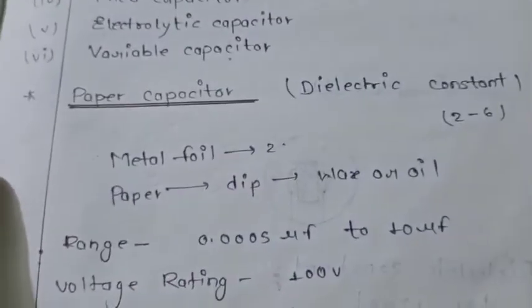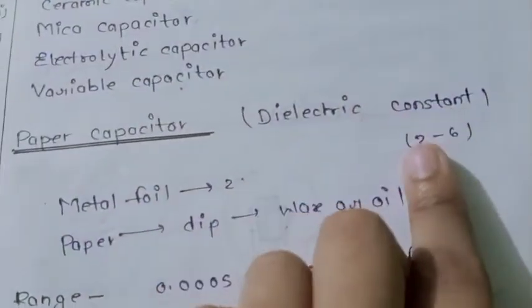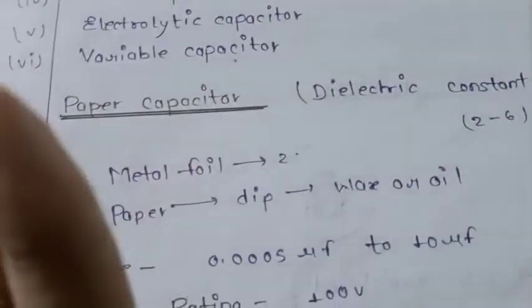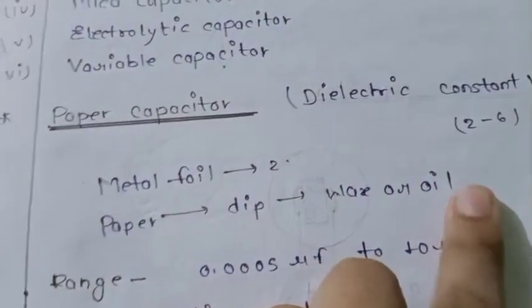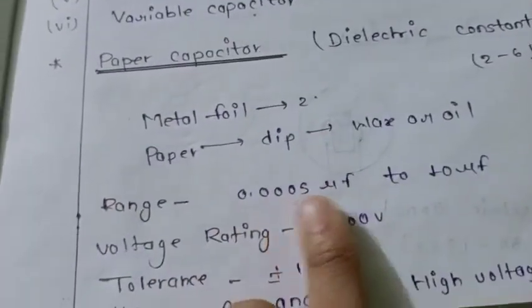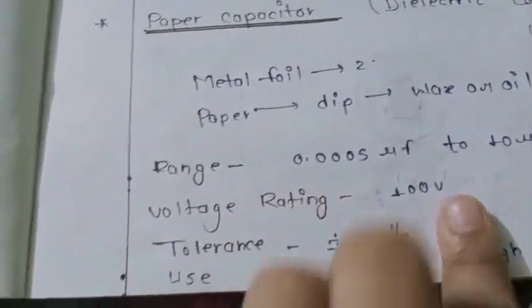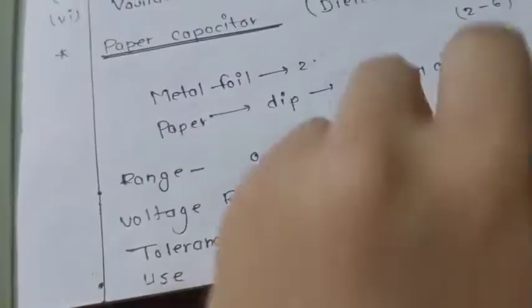First, paper capacitor. Paper capacitor is made from paper with dielectric constant of 2 to 3. We use two metal foils with paper, and dip it in wax and oil. Its range is 0.0005 microfarad to 10 microfarad. Voltage rating is 100V and tolerance is plus minus 10%. It is used in AC and DC applications for high voltage and high current.